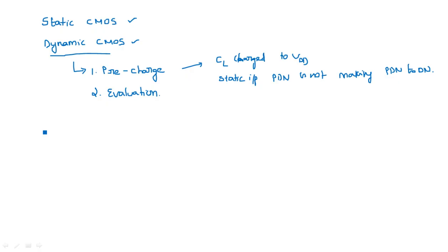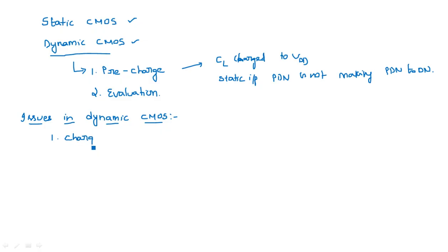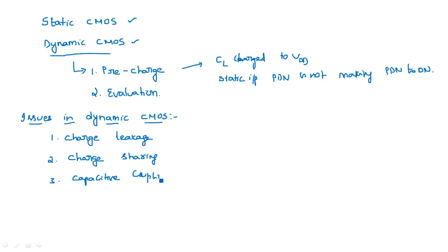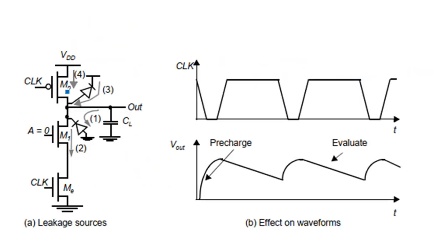We are going to address three issues in dynamic CMOS design. The first issue is charge leakage, the second is charge sharing, and the third is capacitive coupling. Now let us go through each one individually.